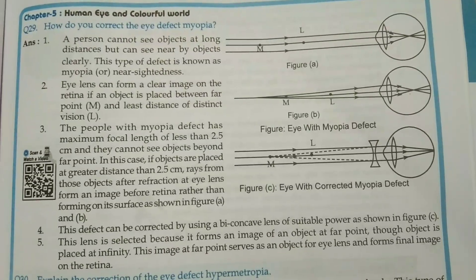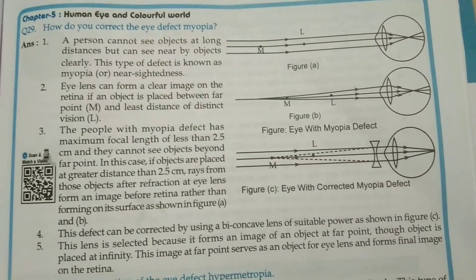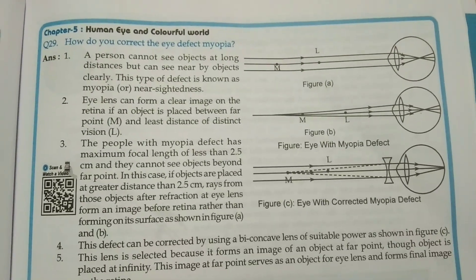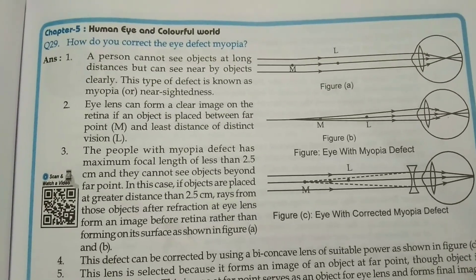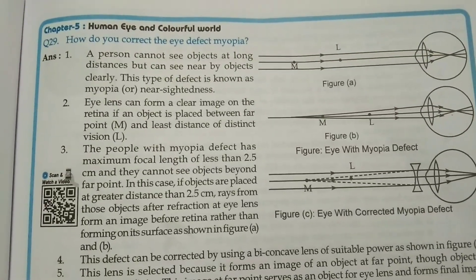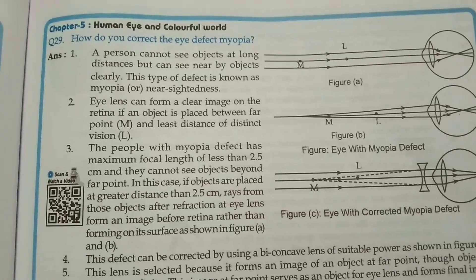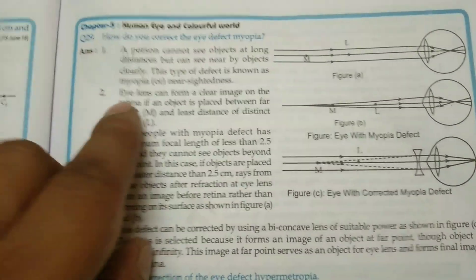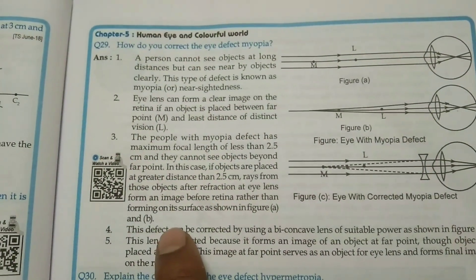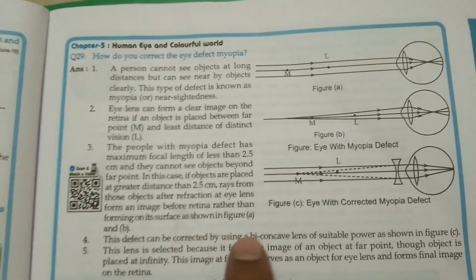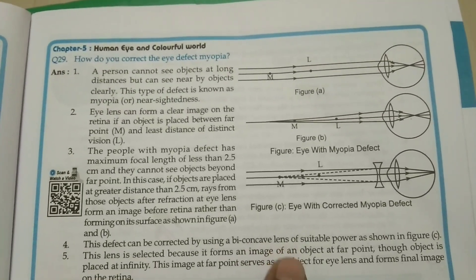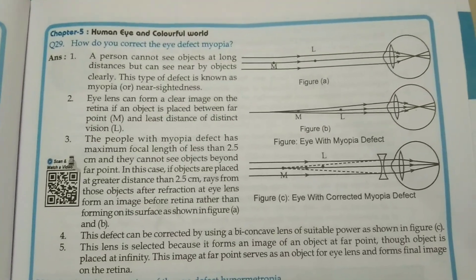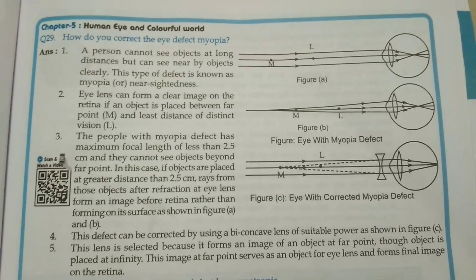Question number one: How do you correct the eye defect myopia? A person cannot see objects at long distance but can see nearby objects clearly. This type of defect is known as myopia or nearsightedness. This defect can be corrected by using a bi-concave lens of suitable power, as shown in the figure.